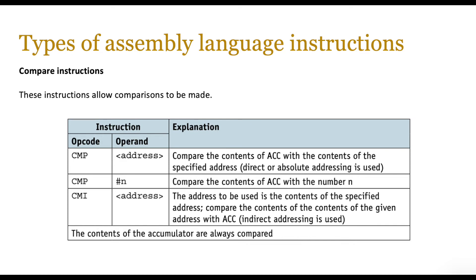The next set of instructions are compare instructions. CMP compares the contents of the accumulator with the contents of a specific address, and CMI is another version of comparison which uses indirect addressing. In all types of compare instructions, the contents of the accumulator are always compared. Often a compare instruction will be followed by a jump instruction, because after the comparison — if it's true or false — you then jump to different locations. You will probably be able to identify these patterns the more you go through assembly language instructions.